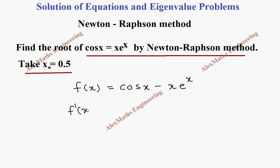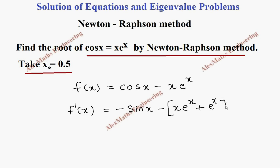Now we find its derivative f'(x). The derivative of cos(x) is -sin(x), and for -x·e^x we apply the product rule: x·(e^x)' + e^x·(x)' = x·e^x + e^x. Taking the minus sign common, f'(x) = -(sin(x) + x·e^x + e^x).